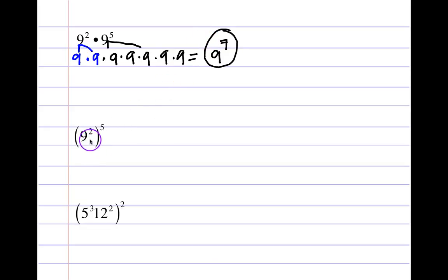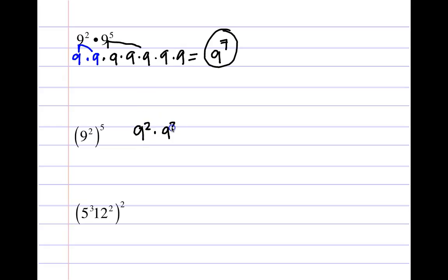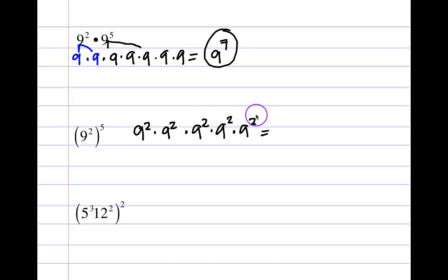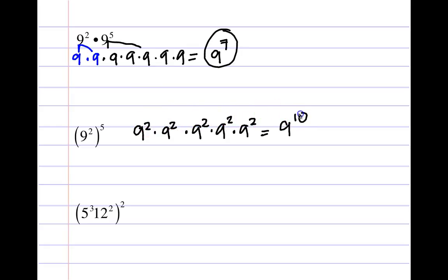Now, what about this — a problem that intimidates a lot of students. You start on the outside: something is being raised to the fifth power. What is being raised to the fifth power? Nine squared. So I'm going to repeat nine squared five times. Again, you'll likely be asked for exponential form. Nine is the repeating base — counting: two, four, six, eight, ten total. So the answer is nine to the tenth.